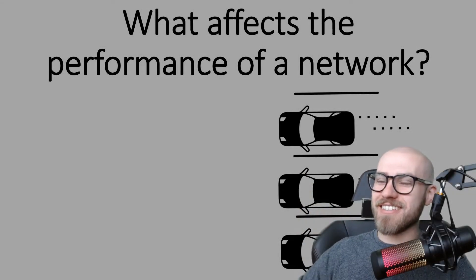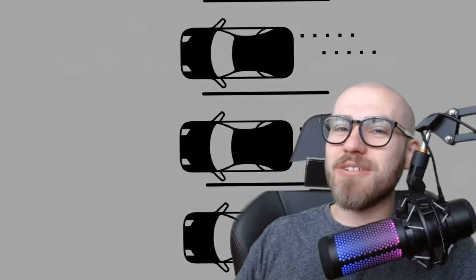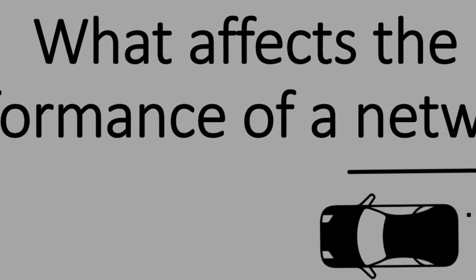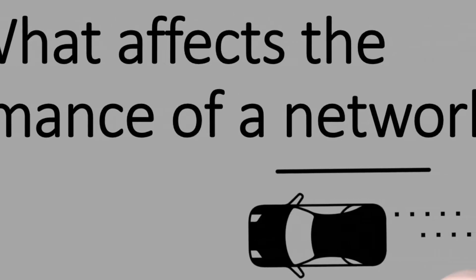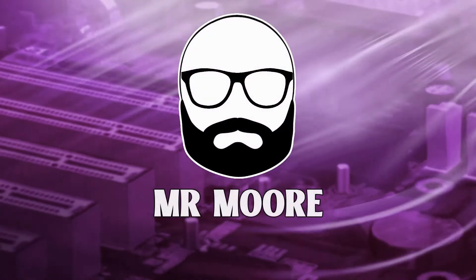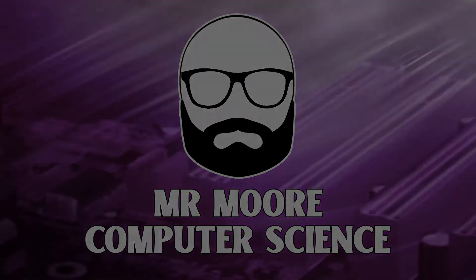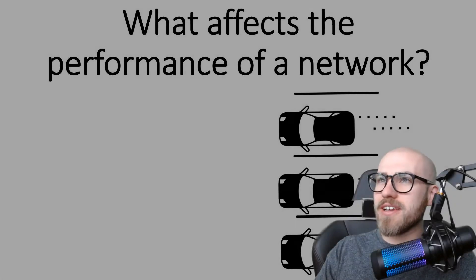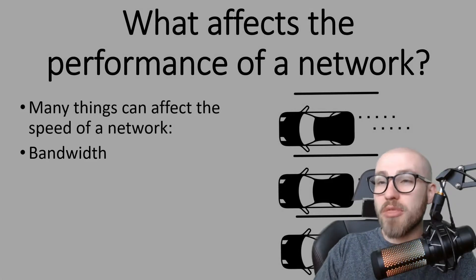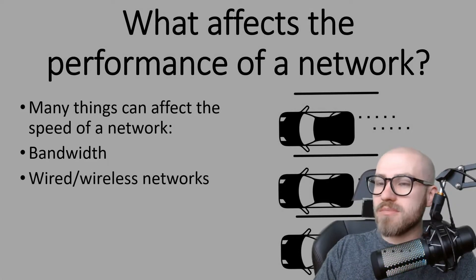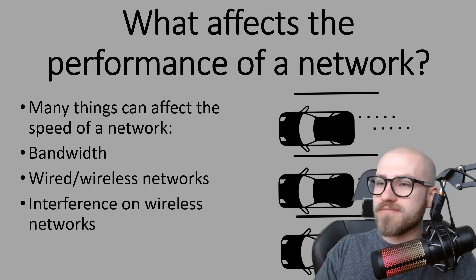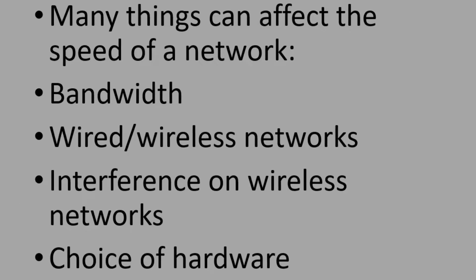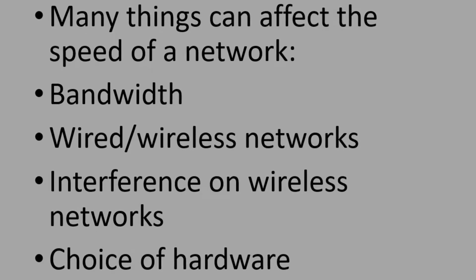Hello everybody! In this session we are going to be looking at what affects the performance of a network. There are quite a lot of things that can affect the performance of a network, but the main ones are going to be bandwidth, depending on whether it's wired or wireless, interference on wireless networks, and your choice of hardware when you set up the network.